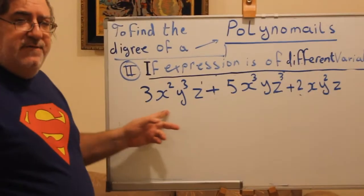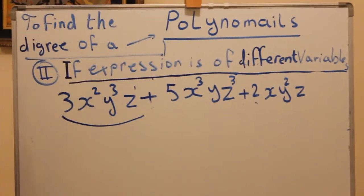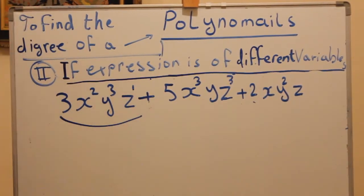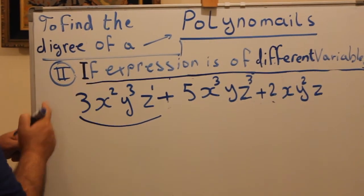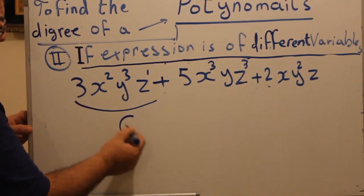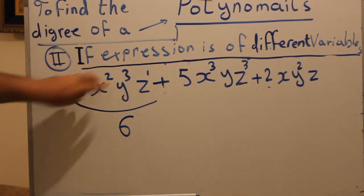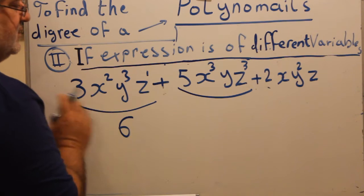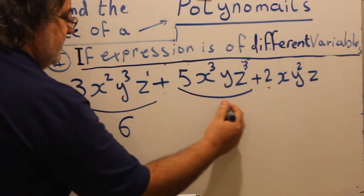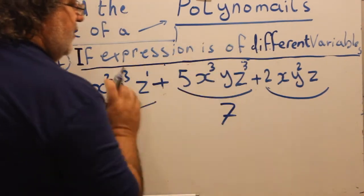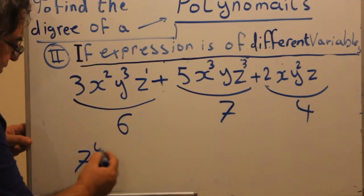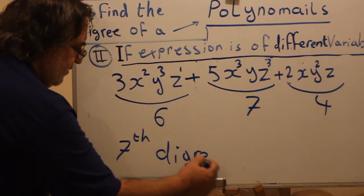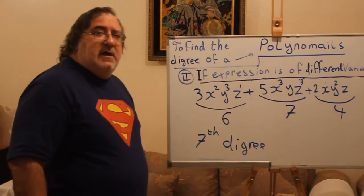Let's confirm with the first term: 3x squared y cubed z — don't look at the coefficient. The powers are 2 plus 3 plus 1, which equals 6. The third term without the coefficient: 1 plus 2 plus 1 equals 4. The highest degree among all terms is 7. So this polynomial is of the 7th degree and is a trinomial.